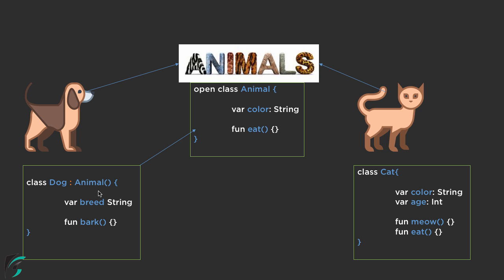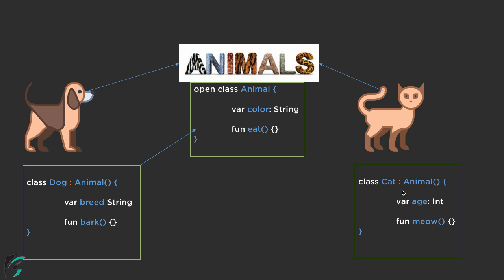This is the syntax to inherit all the properties from the class Animal in case of Kotlin: colon followed by Animal, and this is the default primary constructor that is called. And in case of Cat as well, we can again use the concept of inheritance — colon Animal. And if you notice, in case of Cat and Dog, we have simply removed the properties of color and the eat function, and now we are only left with age and meow, and here breed and bark, because these two properties are actually present in class Animal, which these two classes are getting indirectly.